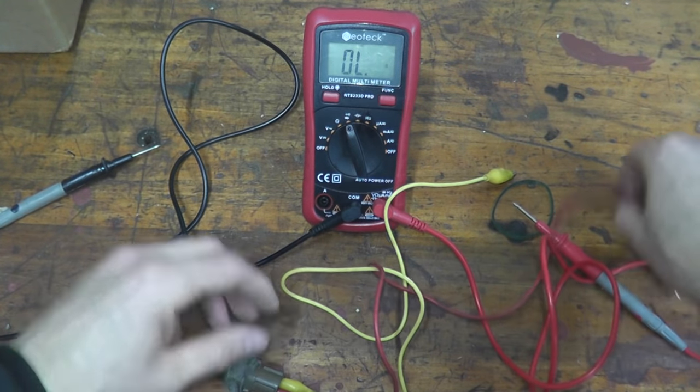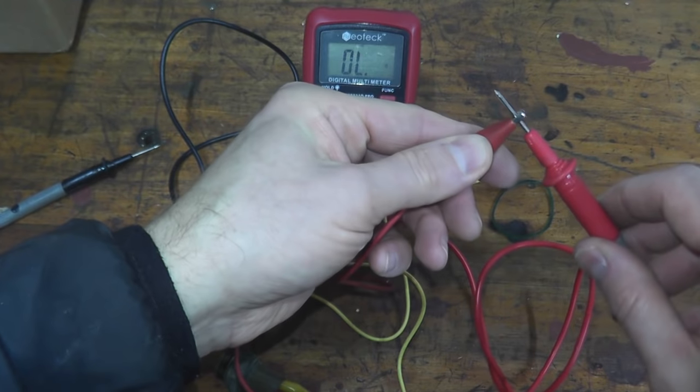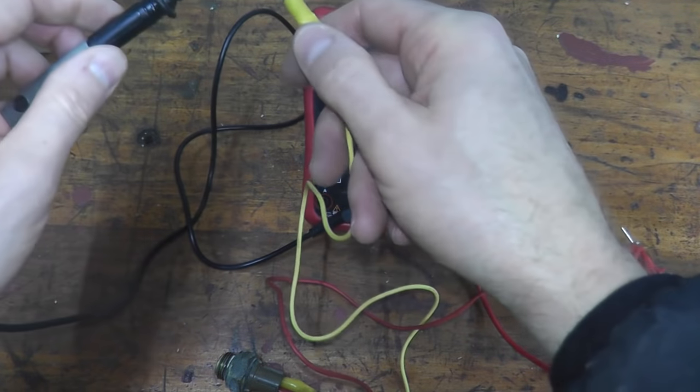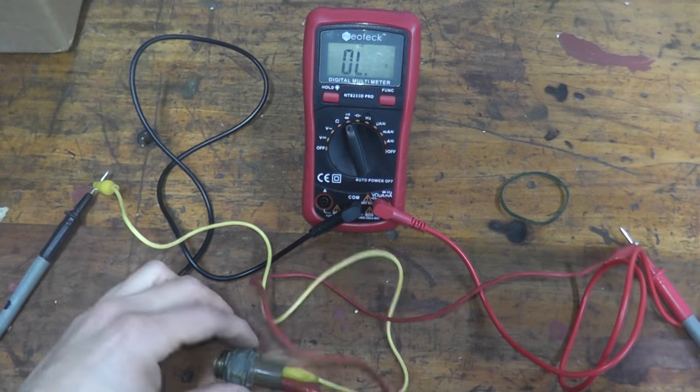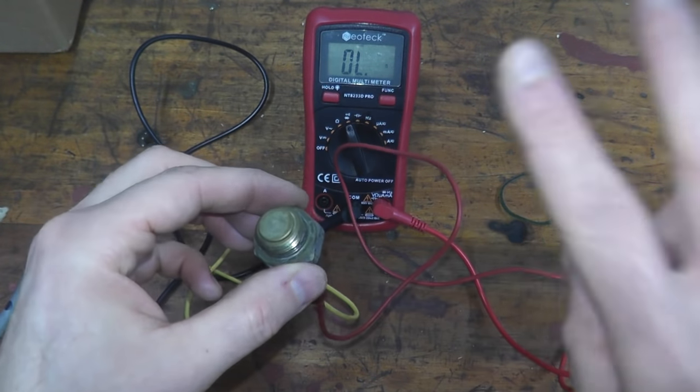And then one lead goes to red, one lead goes to black. Now we have no continuity and that makes sense, but we need to heat this up. Two ways you can do that.